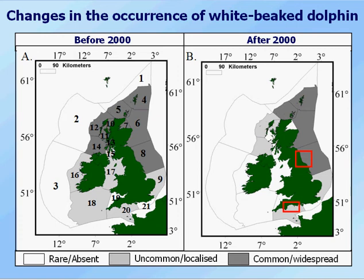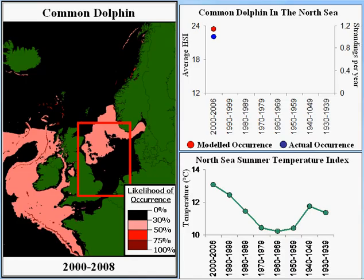This leads me to the third section: looking at the effects of climate change on cetaceans. To do this we've been taking data from Marine Life — just as we built models for beaked whales in the Bay of Biscay — taking data for all the different species Marine Life collects, combining it with data from a couple of other groups, and using it to predict where species are likely to occur based on things like water depth and, more importantly, sea temperature. By doing this we can get an understanding of where the species occurs at any given time given the temperature at that time. This is a predicted distribution for common dolphin.